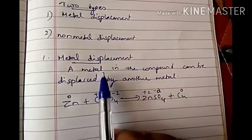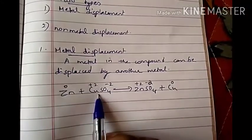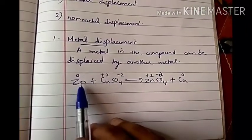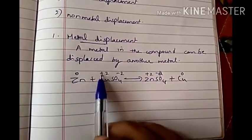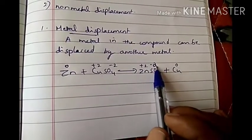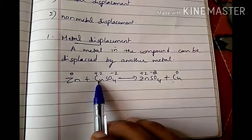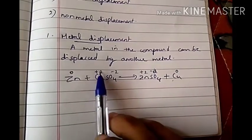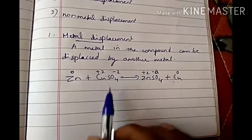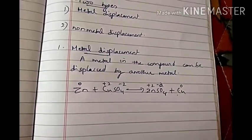Metal displacement reaction means a metal in a compound can be replaced by another metal. For example, zinc replaces copper from copper sulfate, giving zinc sulfate plus copper. The oxidation number of zinc is zero and that of copper in copper sulfate is plus two (SO₄ is minus two). In zinc sulfate the oxidation number of zinc is plus two, and elemental copper's oxidation number is zero. Zinc's oxidation number increases from zero to plus two — so it is undergoing oxidation. Copper's oxidation number decreases from plus two to zero — so it is undergoing reduction. Both oxidation and reduction occur, making this a redox reaction.